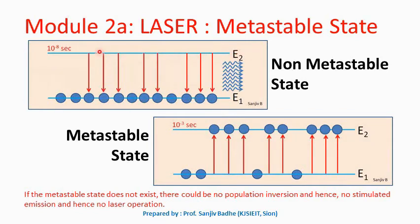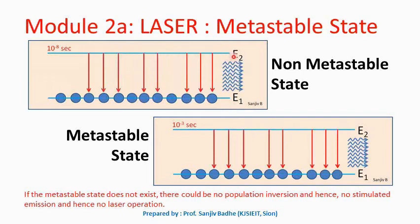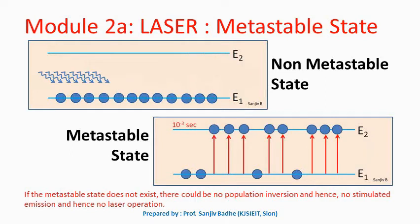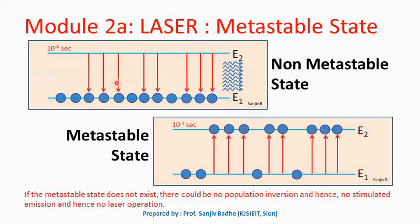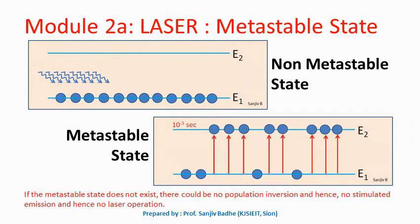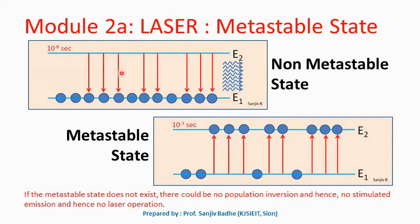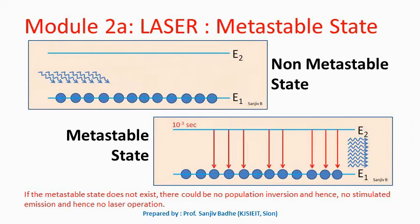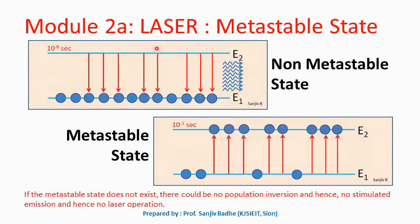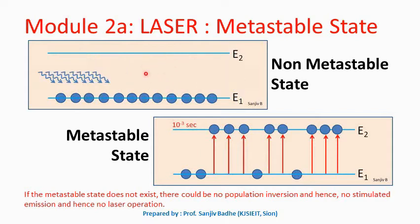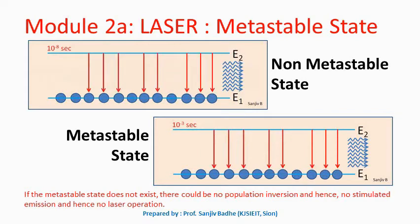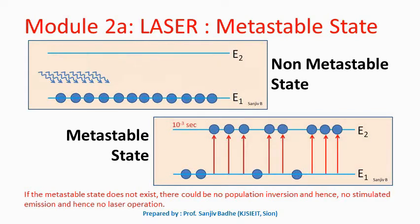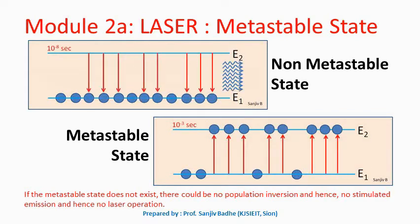The number of atoms in the higher energy level will never increase. We are doing all the hard work in taking them to the higher energy level and immediately they are falling down. So population inversion cannot be achieved, and if population inversion is not achieved, then how can we get the light amplification?